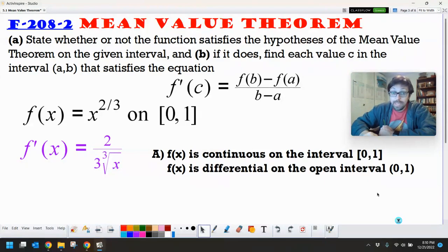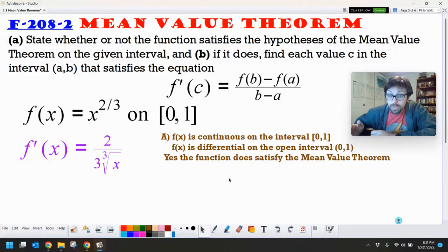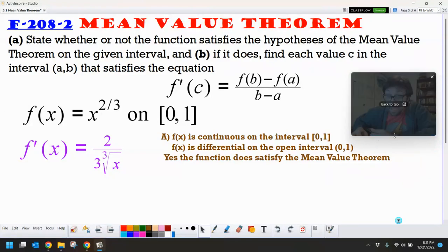So for part A, yes, we do satisfy the Mean Value Theorem. So what we want to do now is we want to find each value of C where the instantaneous rate of change is equal to the average rate of change. So first thing I got to know is, what's the average rate of change?